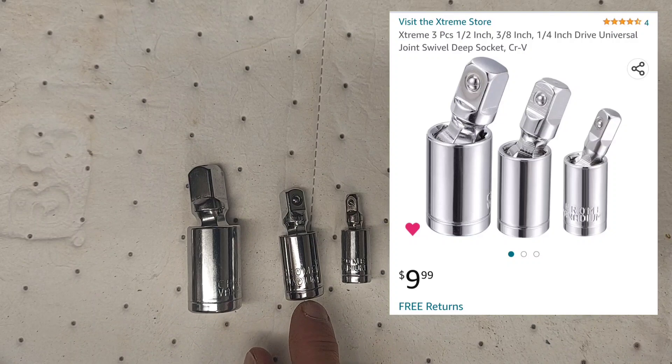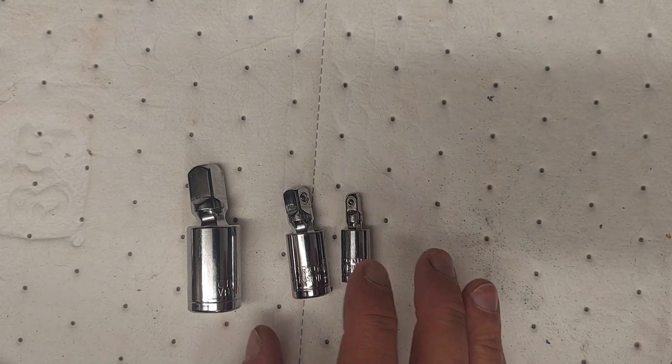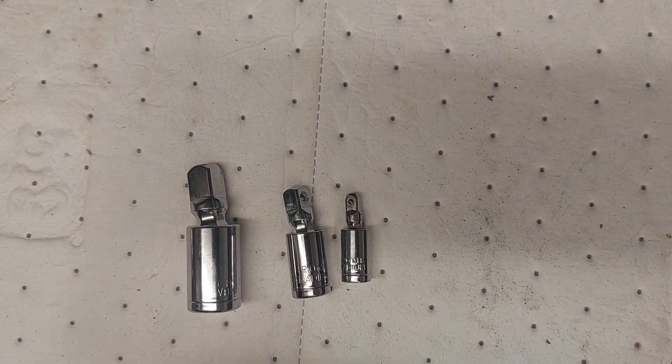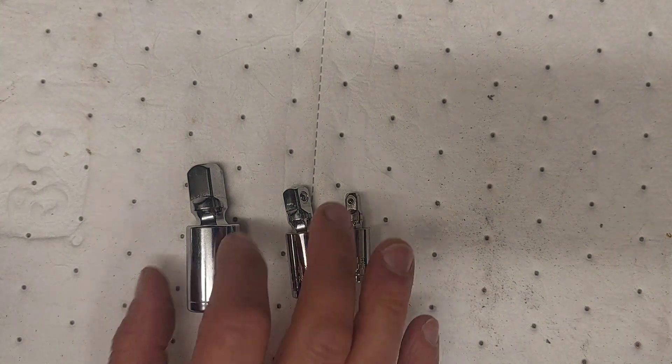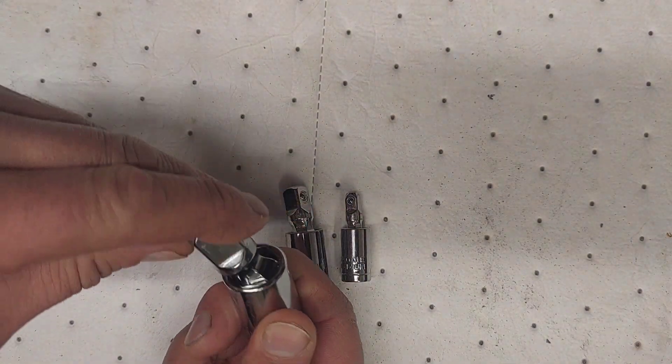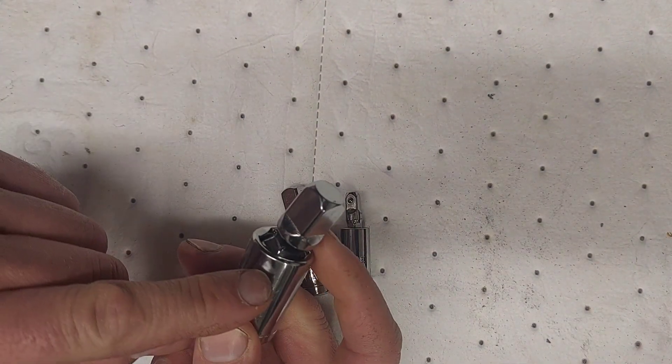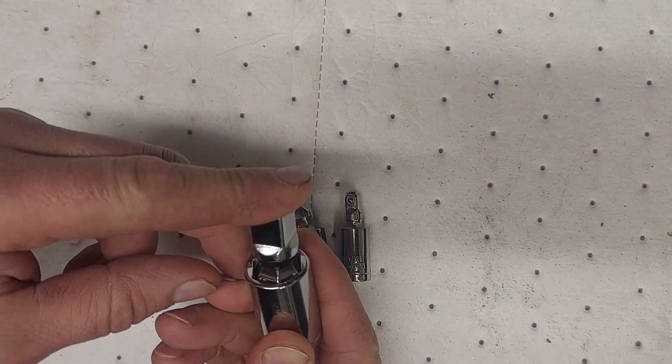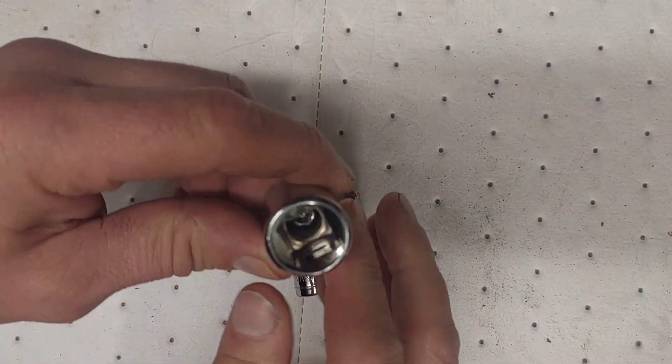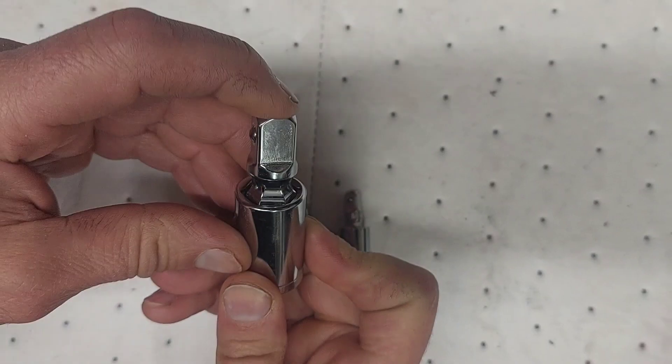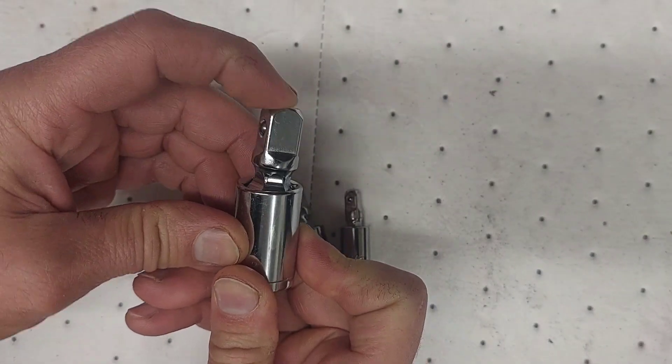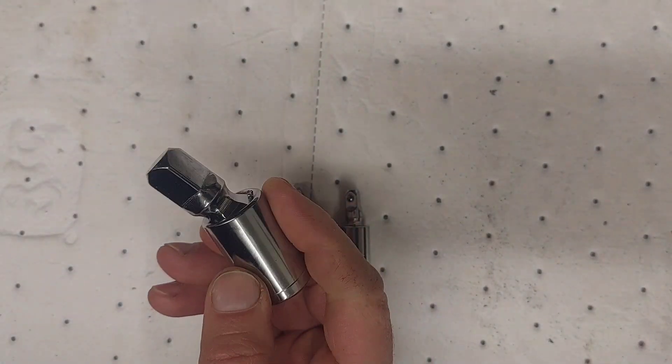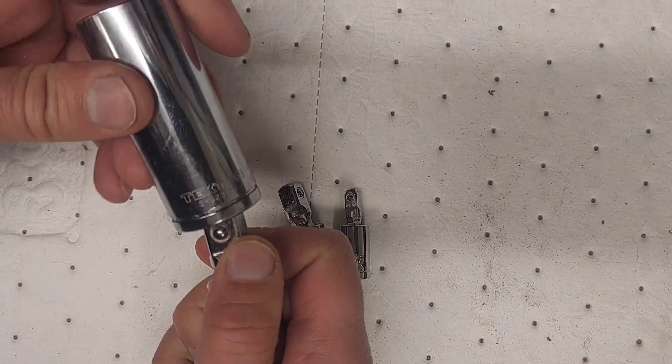They are heat treated chrome vanadium steel and they are universals. They don't have pin detents, they are just pressed in and they do have the springs on the inside. You can tell that by when you push down on it, it springs back up.